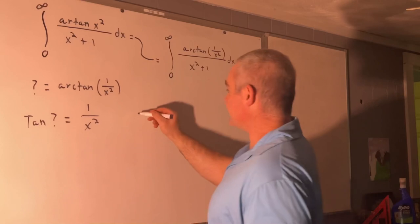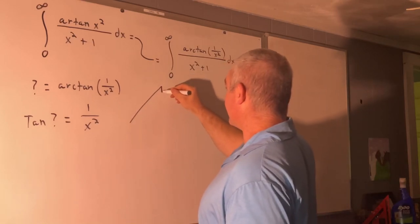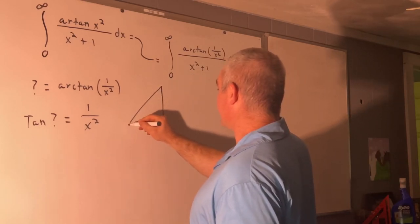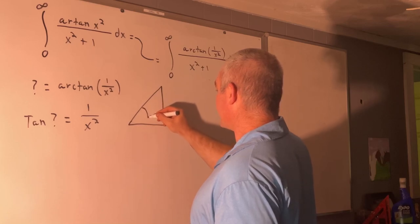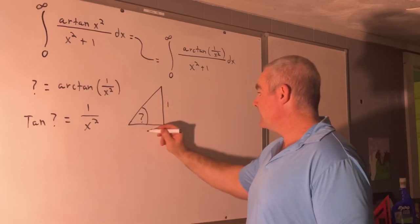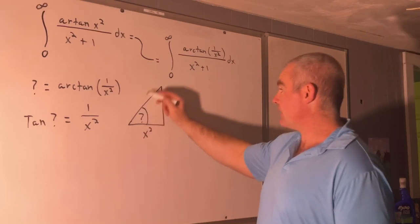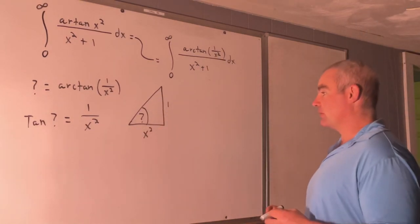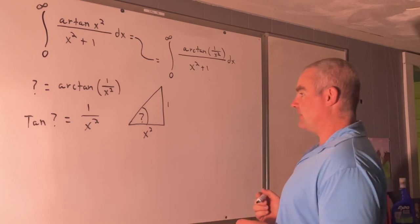So from this, we will draw a triangle representing that relationship. So we have some angle question mark and its tangent is 1 over x squared. And I'm not even going to write what the hypotenuse is. It's the square root of x squared plus 1, but we don't even need it.